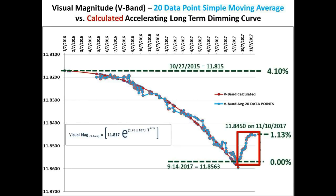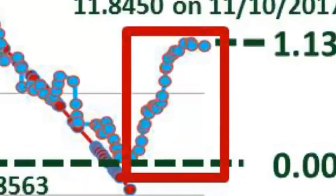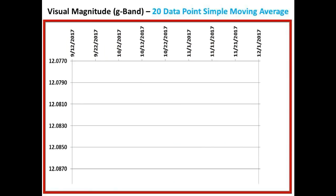So let's zoom in and construct a 20 data point simple moving average of Bruce Gary's data. His data is represented by the accumulating circles that you see here. The neat thing about the 20 data point simple moving average is that you get to see the shape of the long-term trend of Tabby's Star — none of this guessing on what the shape looks like. It takes out the variability of the individual measurements.